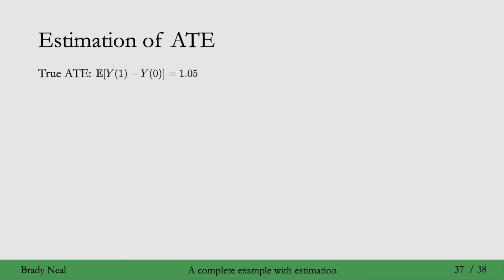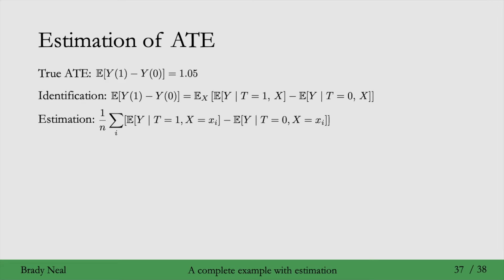So remember that the true average treatment effect is 1.05. And here is the adjustment formula, which is very similar to the backdoor adjustment. Here we're adjusting for X. Then, as we saw last week, we estimate this by taking an empirical sum over the N data points. So the i in the summation here indexes each data point, and then X sub i is the covariates of the ith data point. And so we're taking that outer expectation over X in the identification line, and we're estimating it with this empirical sum over the N data points.